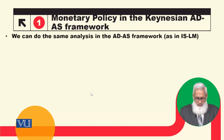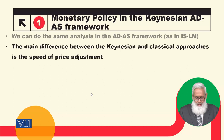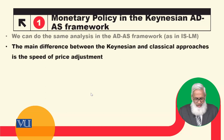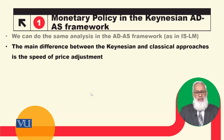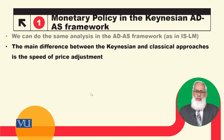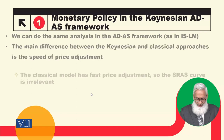We will have similar results from the ISLM model. The main difference between the Keynesian and Classical approaches is the speed of price adjustment. This is the basic and main difference. Classicals say that prices adjust instantly, and Keynes says that prices are sticky, so they will slowly adjust.